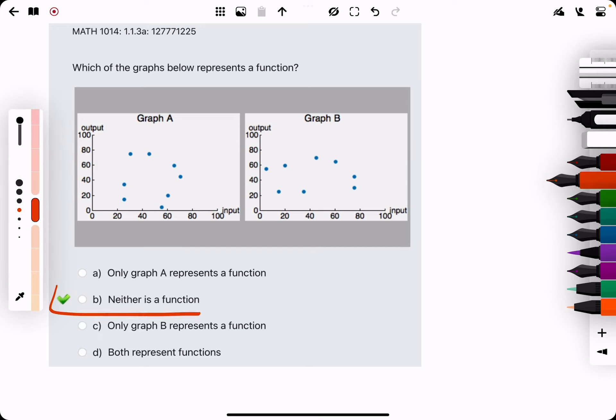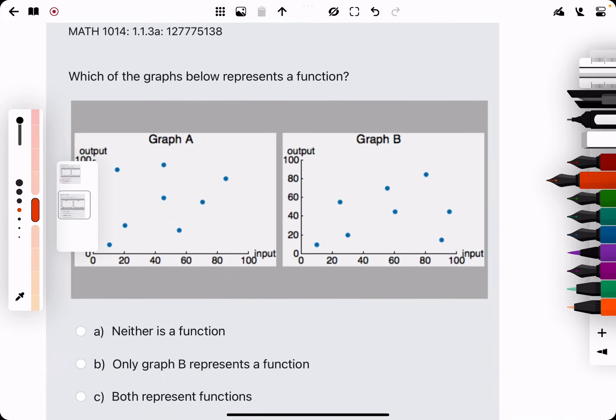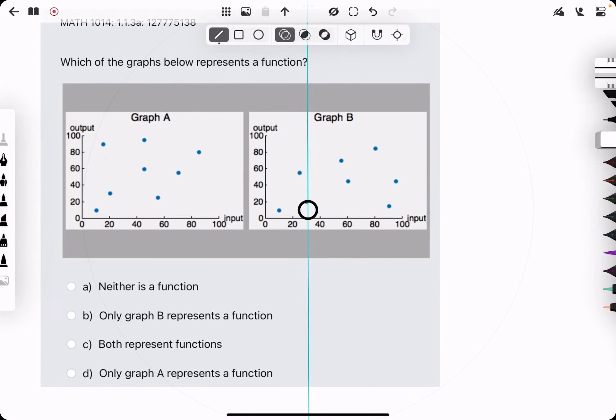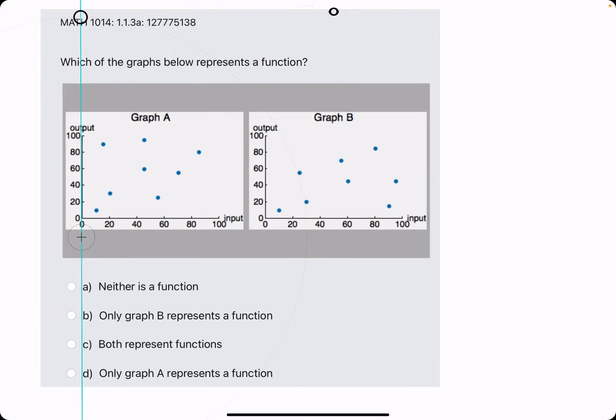So neither A nor B is a function. Let's go ahead and do one more example very quickly. Let's break out our vertical line here. Scanning through A.